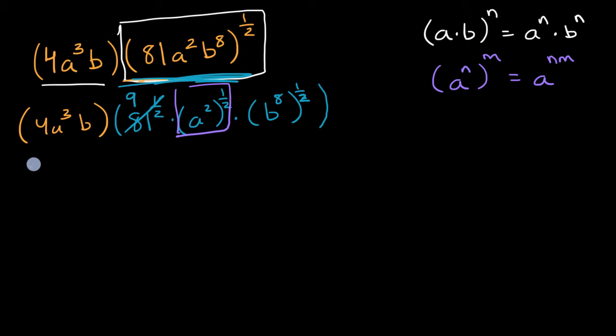So let me just rewrite all of this. This is going to be 4a³b, and then times, I have nine, and then in purple, I have a² to the 1½, which is a to the two times 1½. Two times 1½ is one, so this is a to the first power. A to the first power is the same thing as just an a. And then we will do that again right over here.